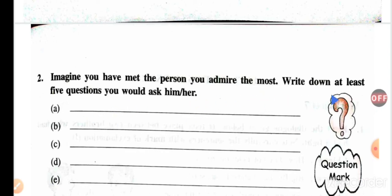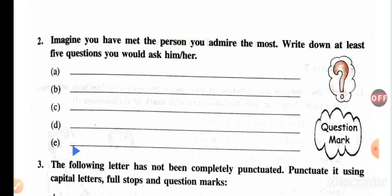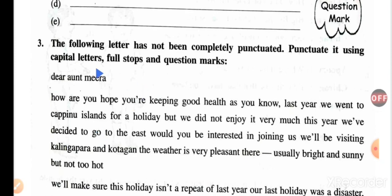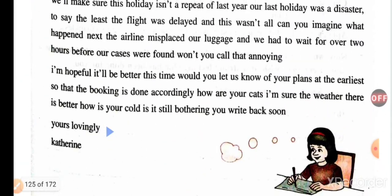Imagine you have met the person you admire the most. Write down at least five questions. For example: 'How do you fight corruption?' 'How do you stay calm?' 'What is your idea of nationality?' 'Do you exercise regularly?' — whatever questions come to your mind, you ask. Now the following letter has not been completely punctuated using capital letters, full stops, and question marks. You now have the idea how to use them, so you will do it. For today it is enough — tomorrow exclamation marks will be explained. Thank you.